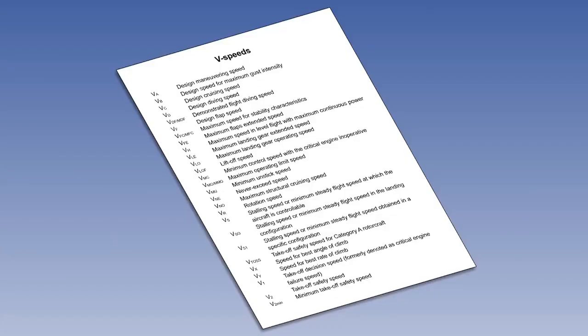Certain operating or limiting speeds that are significant in the operation of an aeroplane are given abbreviations for easy reference, known collectively as V speeds. There are many of them covering the entire flight envelope. For example, VS, stalling speed.